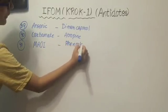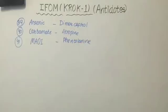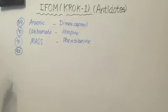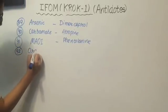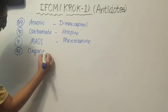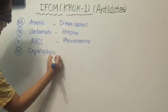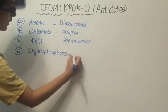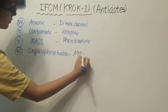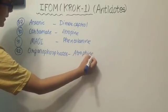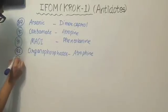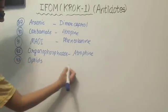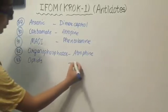Our 42nd drug is organophosphates. The antidote of organophosphates is atropine. Our next drug is opioids. The antidote of opioids is naloxone.